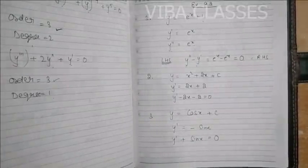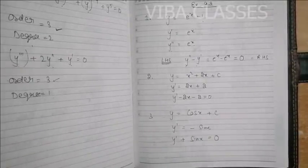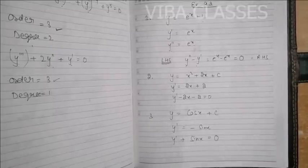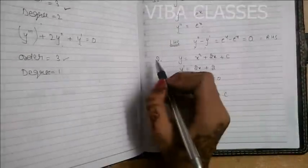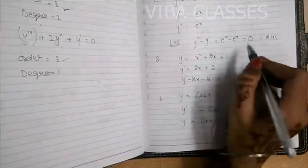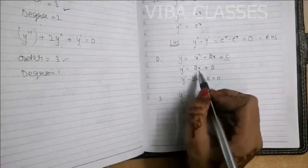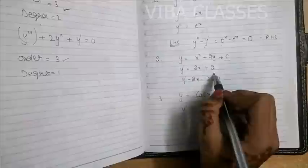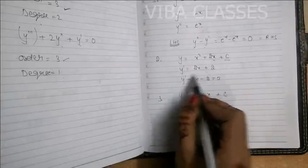You can do it two ways: substitute y dash and y double dash values into the differential equation and verify left equals right side. The other option is to do it directly. Now question 2: y = x² + 2x + c, where c is an arbitrary constant. Take the derivative: y' = 2x + 2. When this differential equation is formed, the right side comes from the left side. So y' − 2x = 2, and that is your differential equation.